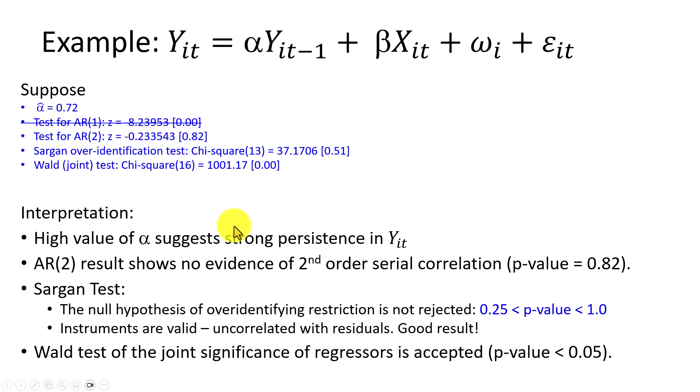And finally, the Wald test here, with a p-value that's way less than any conventional level of significance, means that we can accept the joint significance of all the regressors.